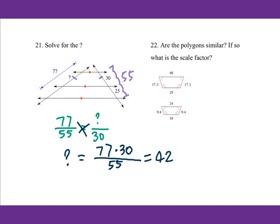For number 22, are the polygons similar? If so, what is the scale factor? For similar polygons, the corresponding angles must be equal and the ratio of corresponding sides must be the same. We check the ratio of corresponding sides: 40 over 24, and 29 over 18, and 30. These are not equal to each other. Therefore, they are not similar.